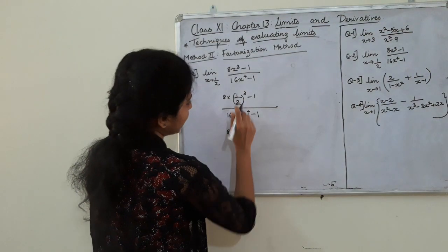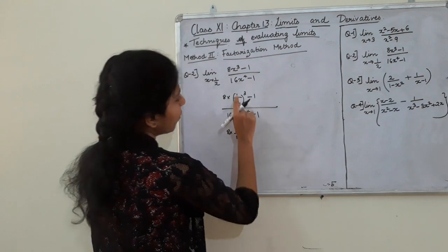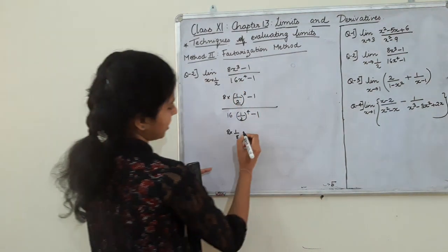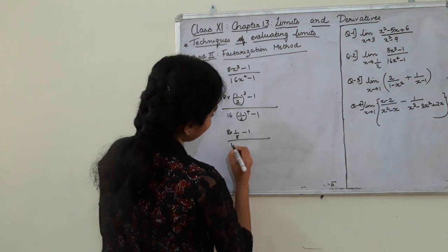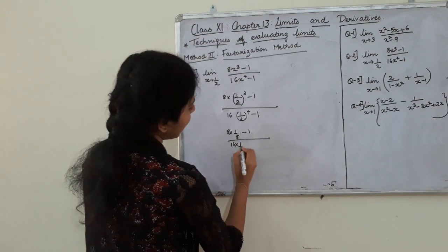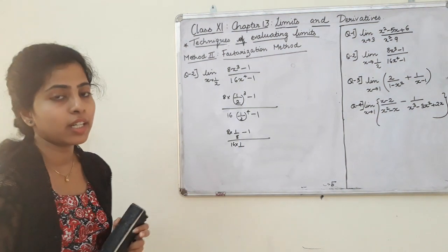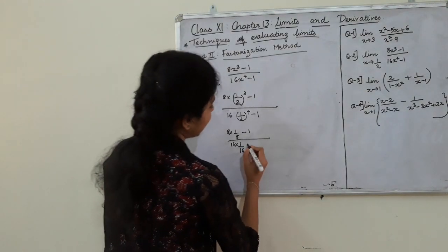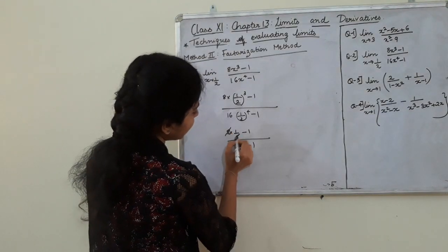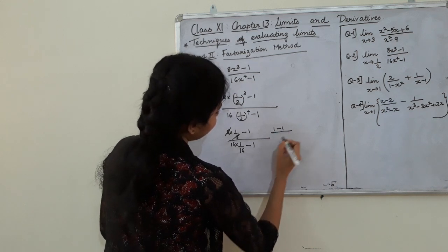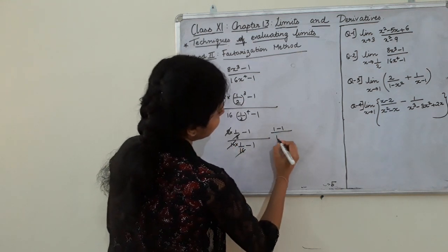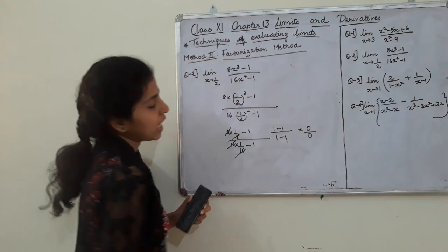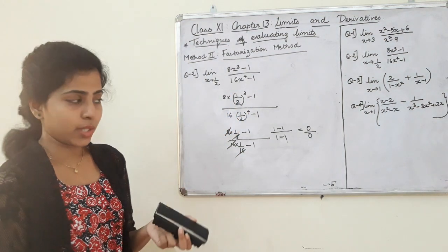8 into 1/8 gives 1, minus 1. The denominator: 16 into (1/2)⁴ — since 2⁴ is 16, that gives 1 minus 1. So we get 0 divided by 0, an indeterminate form.